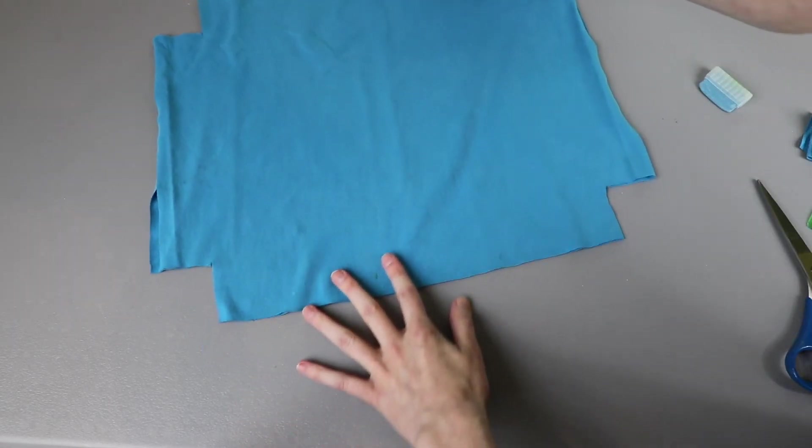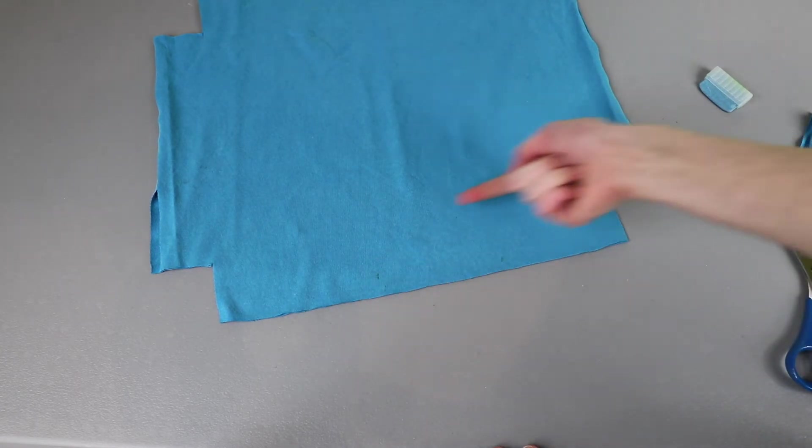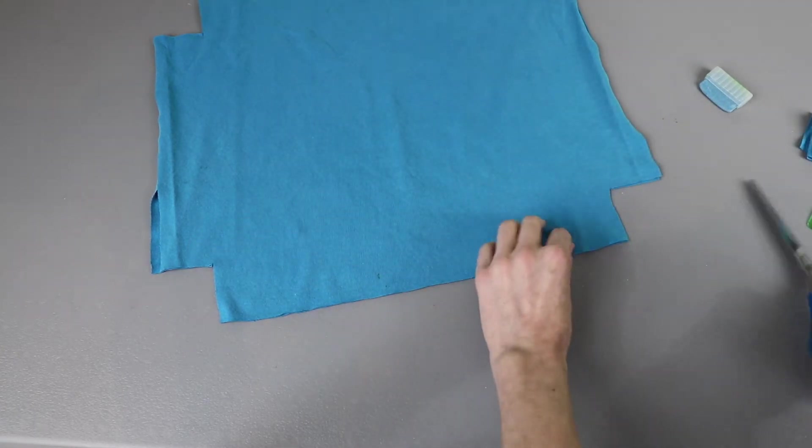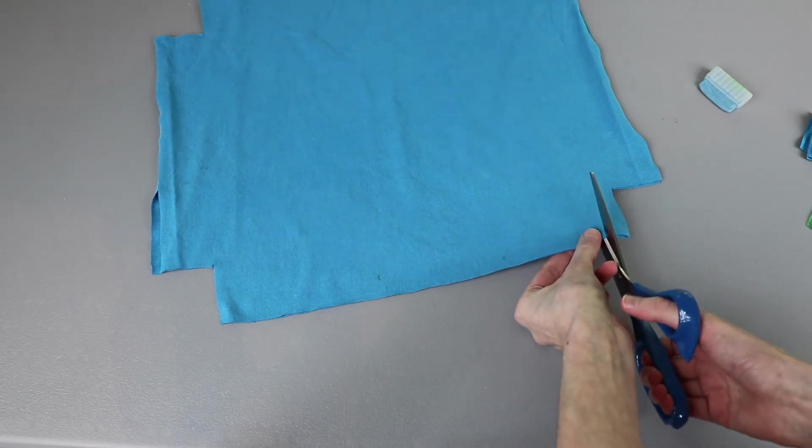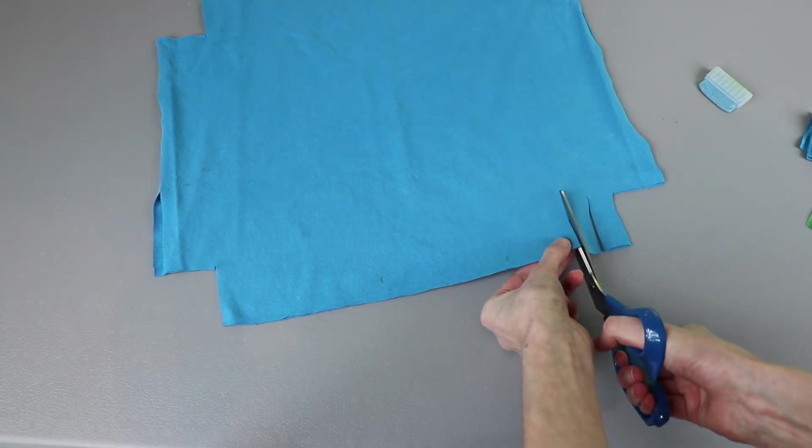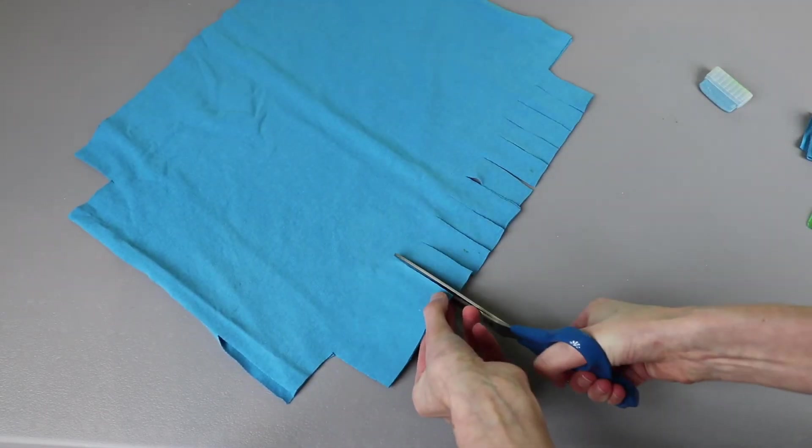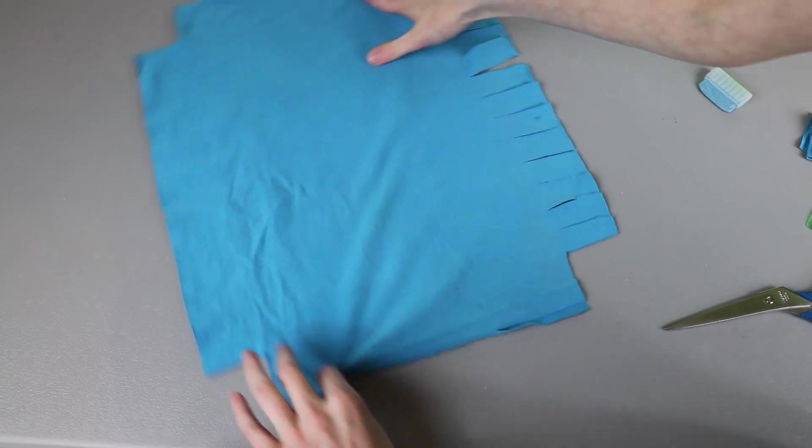Once I have the corners cut out I'm going to go along each side and cut fringes to the same depth as the corners. And I'll make mine about an inch or so thick. Again this doesn't have to be super precise. And repeat on the other three sides.